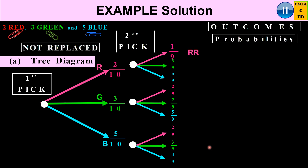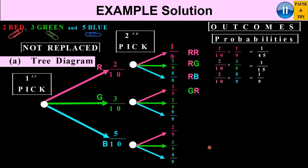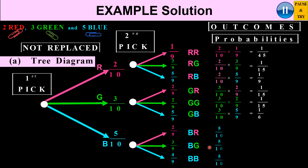I can write down the outcomes: red-red, red-green, red-blue, green-red, green-green, green-blue, blue-red, blue-green, and blue-blue. For example, red-red is 2 over 10 times 1 over 9, giving 1 over 45. Red-green is 2 over 10 times 3 over 9, giving 1 over 15. Red-blue is 2 over 10 times 5 over 9, giving 1 over 9. If you add up all the fractions you get exactly 1. Note the sample space size is 10 for the first pick and 9 for the second.